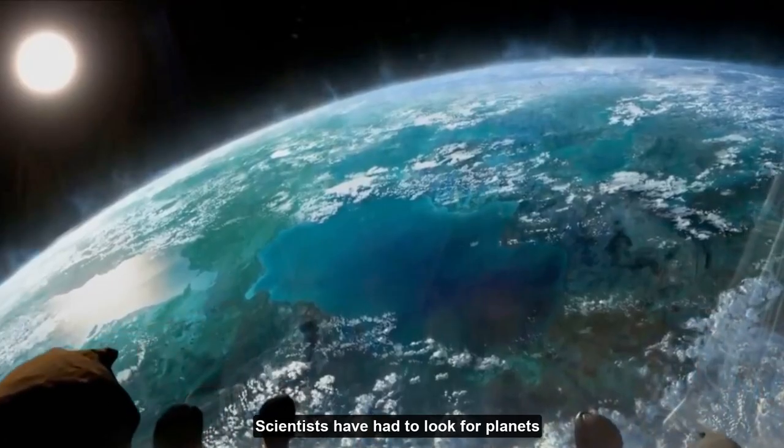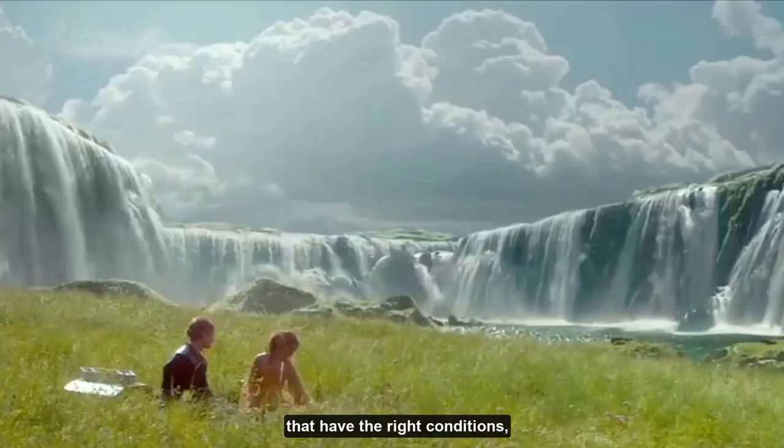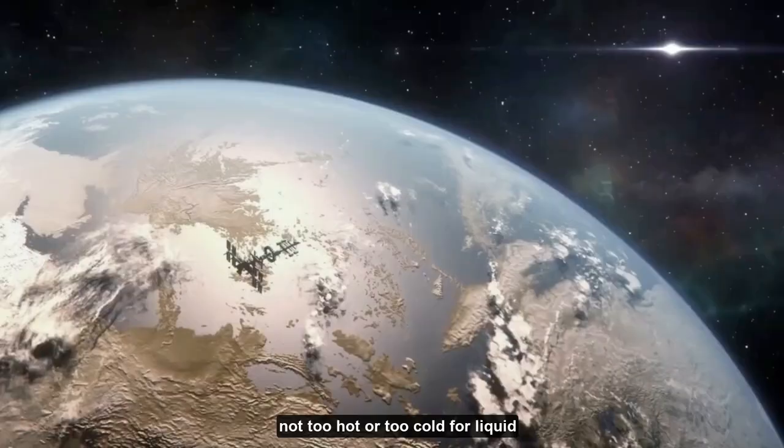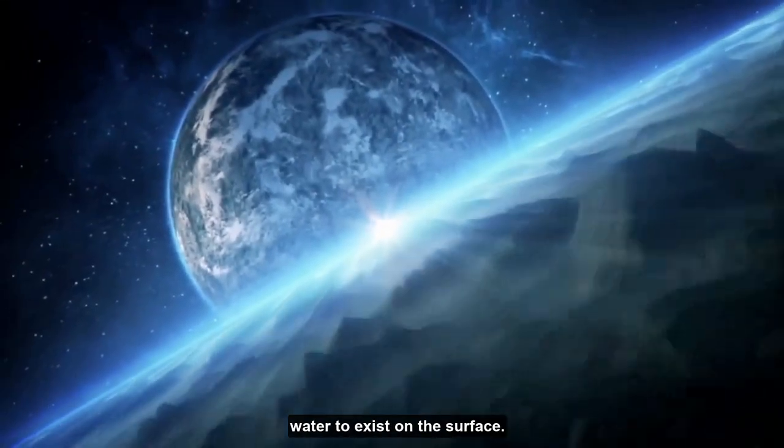Scientists have had to look for planets that have the right conditions, such as being in the Goldilocks zone of their star, where it is not too hot or too cold for liquid water to exist on the surface.